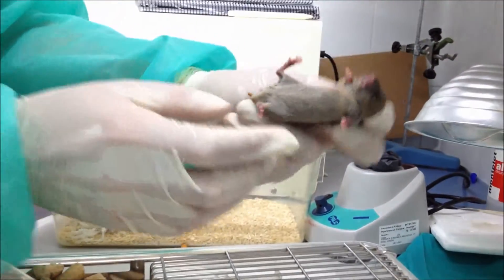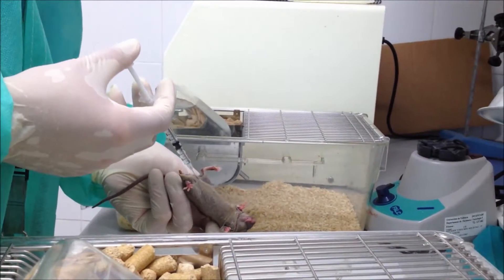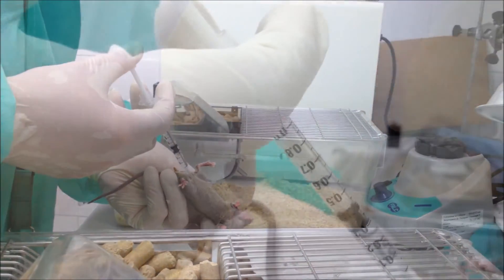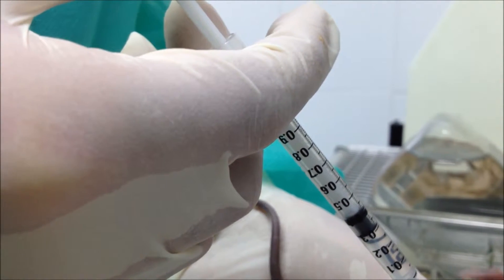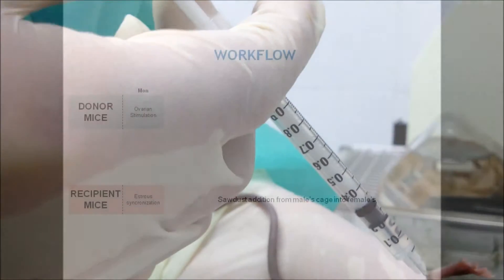Take the female mouse by the tail and the scruff of the neck and hold it in an almost vertical position to displace the organs. Intraperitoneally inject 100 microliters of the pregnant mare serum gonadotropin hormone.